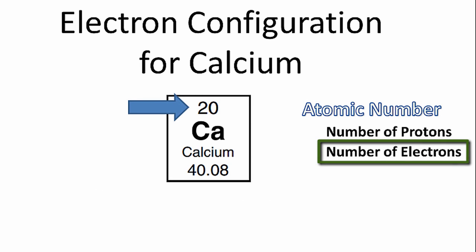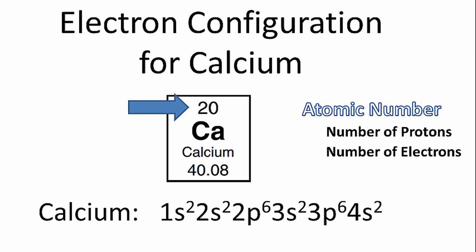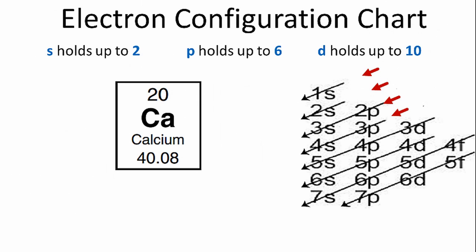Once we know the number of electrons, we can use that information to write the electron configuration for calcium. We'll use the table on the right to help us write the notation. We'll go down the first row, where we have 1s. S orbitals can hold up to 2 electrons, so we'll put both of those electrons in the 1s orbital.